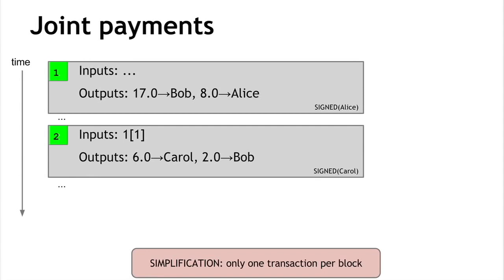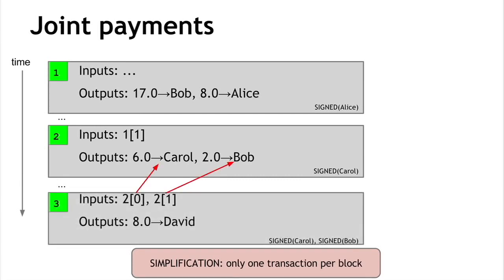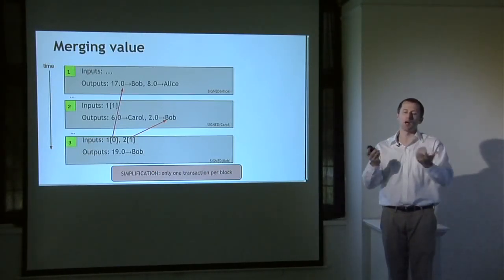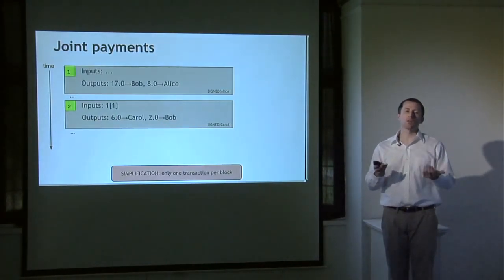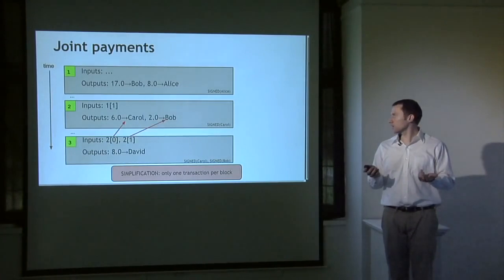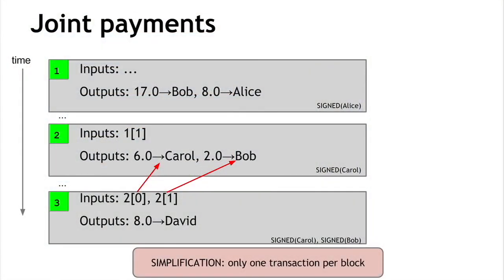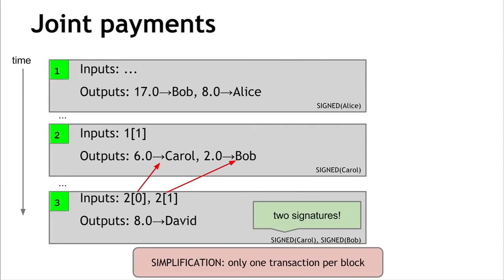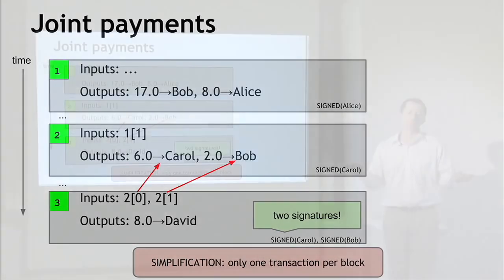We can also merge value quite easily. If two different transactions send money to Bob — say 17 coins in one and 2 coins in another — Bob can create a new transaction with two inputs and one output, combining all 19 coins. Similarly, we can do joint payments: Carol and Bob can both pay David using a transaction with two inputs owned by two different people, combining the value and paying all 8 coins to David. The extra requirement here is two separate signatures — one from Carol and one from Bob.